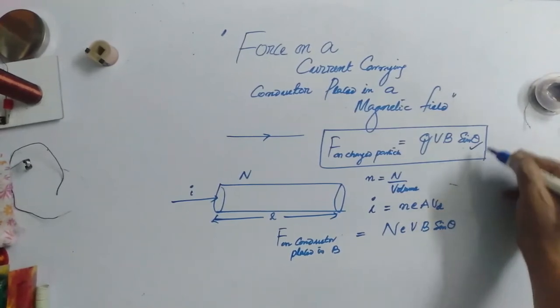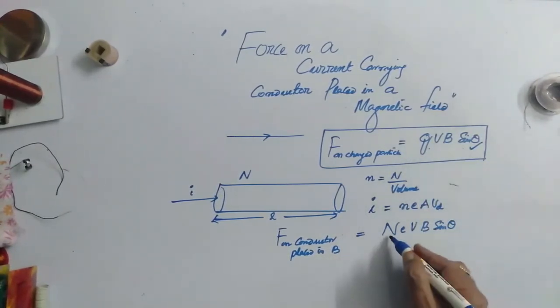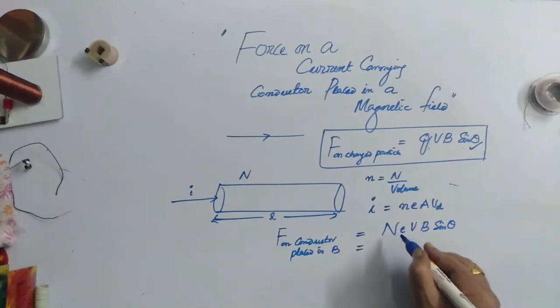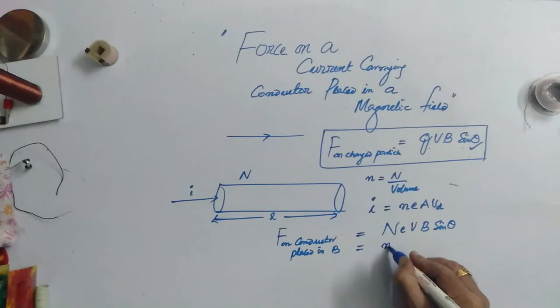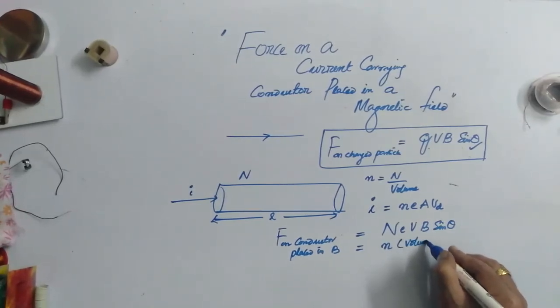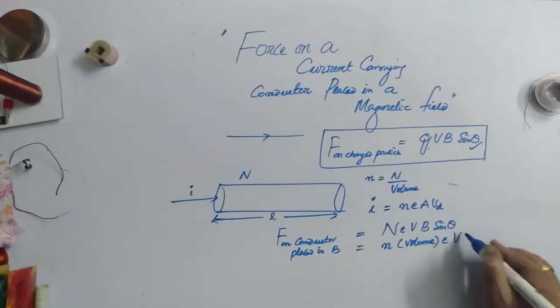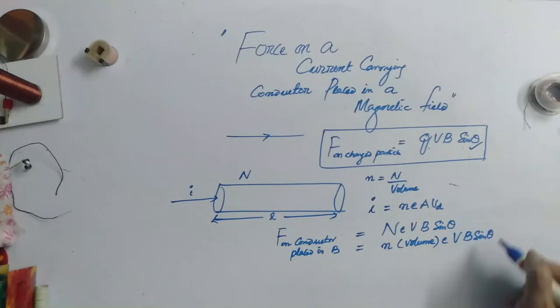Simply I have taken this equation and written in place of Q, as there are N charges. This capital N can be written as N times volume times E, V, B, sin theta.